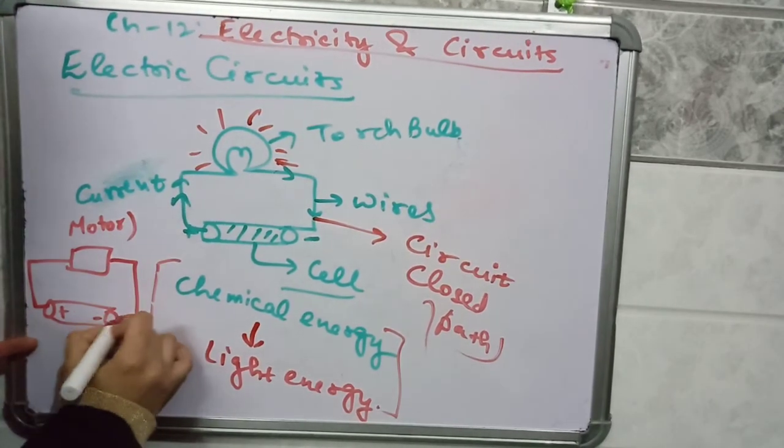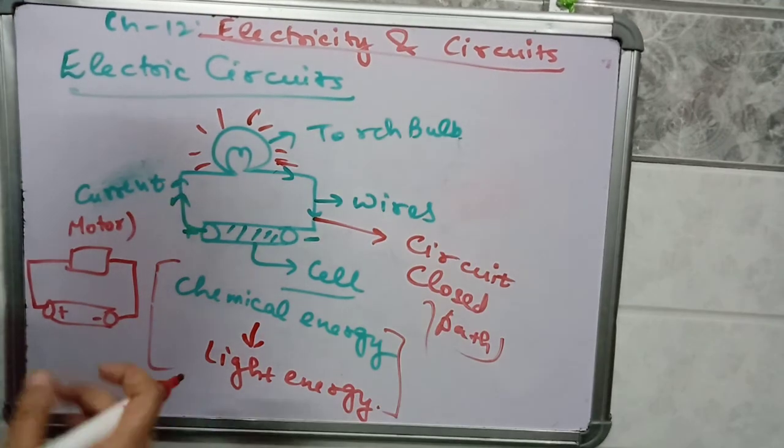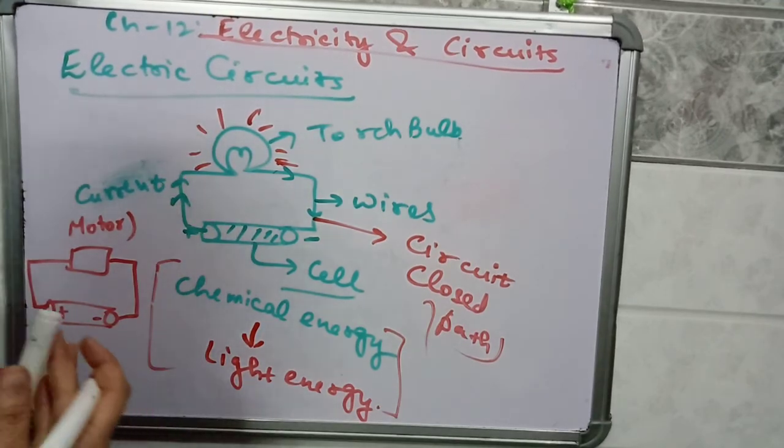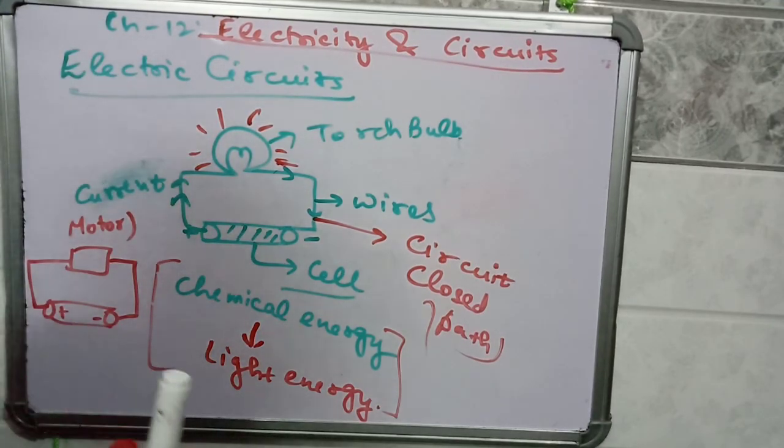Voltage is the work-done capacity of a cell or battery. Voltage is the work-done capacity of a cell or battery.